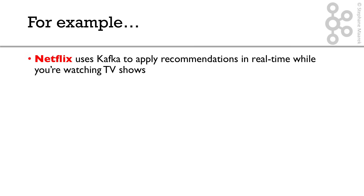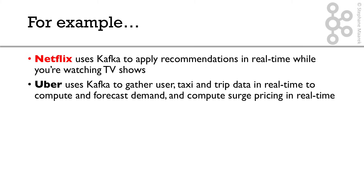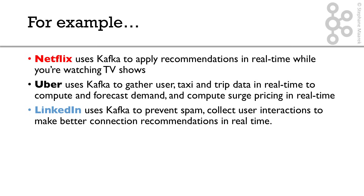To give you some concrete examples: Netflix is using Kafka to apply recommendations in real time while you're watching TV shows, so when you leave a show you get a new recommendation right away. Uber uses Kafka to gather user, taxi, and trip data in real time to compute and forecast demand, and compute surge pricing in real time. LinkedIn uses Kafka to prevent spam, collect user interactions, and make better connection recommendations.